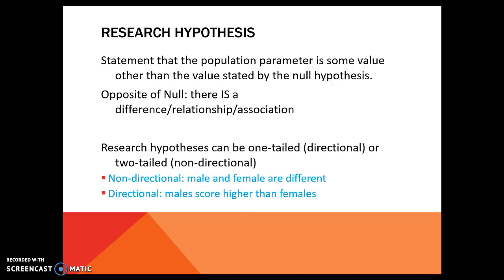The research hypothesis can be directional or non-directional. If it's non-directional, we call that two-tailed — we just want to know is there a difference or not; we don't care which group is higher. If it is directional, we call that one-tailed, meaning we care which group is higher or lower. So non-directional means they are just different; directional means we care which group is higher or lower.